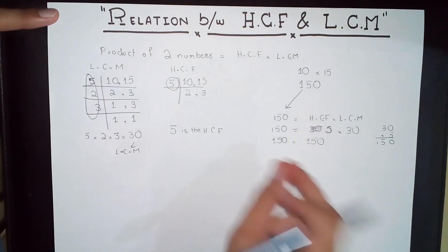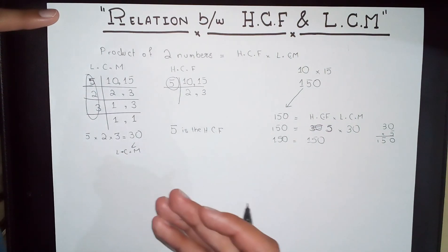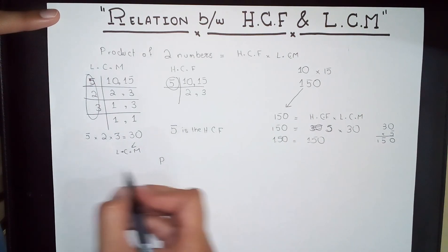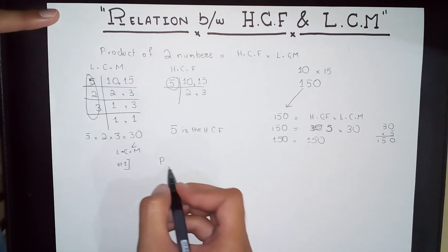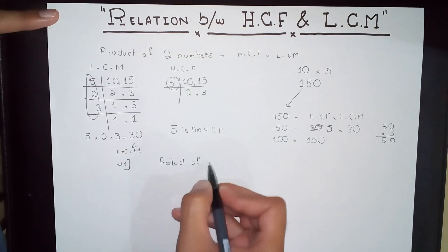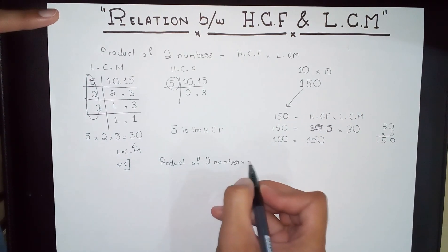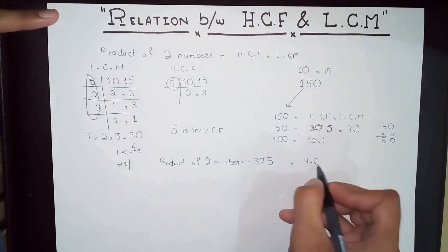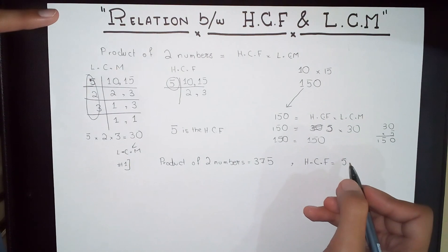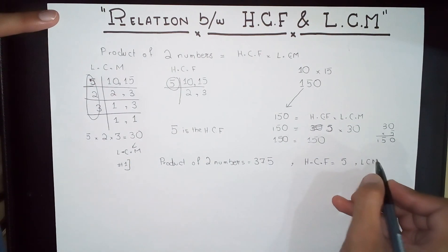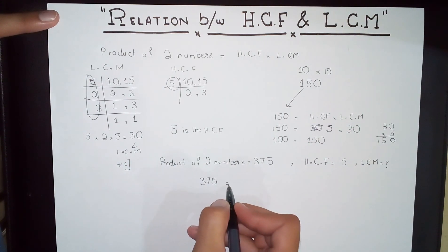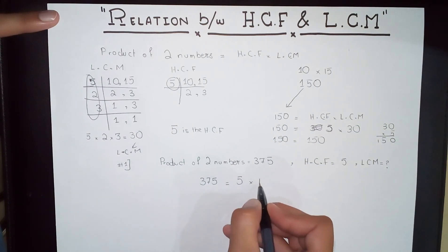So if you have the HCF and LCM of the same two numbers, you can find the product of those numbers. This is useful for exam questions. For example: the product of two numbers is 375, and the HCF is 5 — what is the LCM? Since product = HCF times LCM, we have 375 = 5 times LCM.